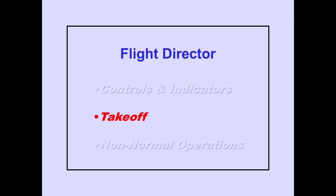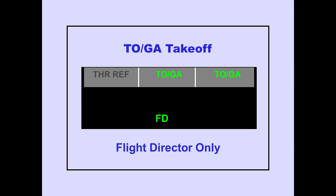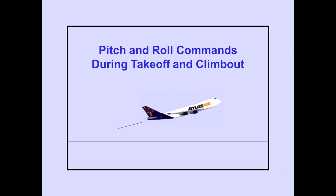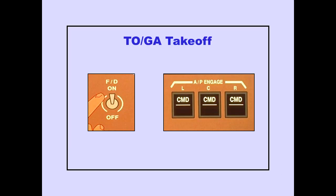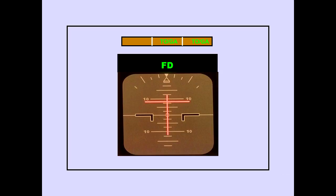Now let's look at the flight director during takeoff. The TOGA takeoff function is a combined pitch and roll mode and is a flight director only mode. In this mode, the flight director provides pitch and roll commands during takeoff and climb out. The TOGA takeoff function can only be selected while on the ground. It is selected by turning the first flight director switch on with all autopilots disengaged. The PFD displays TOGA for both pitch and roll, and the command bars are displayed in a wings-level, 8 degrees nose-up position.